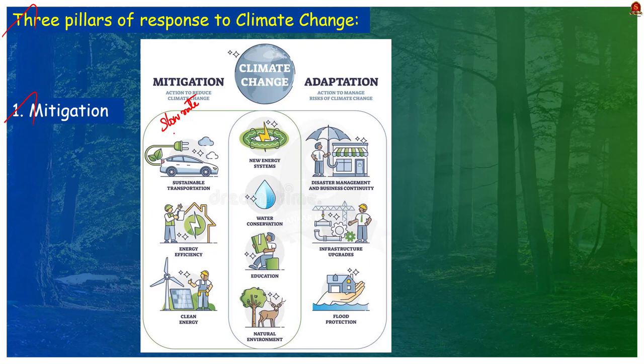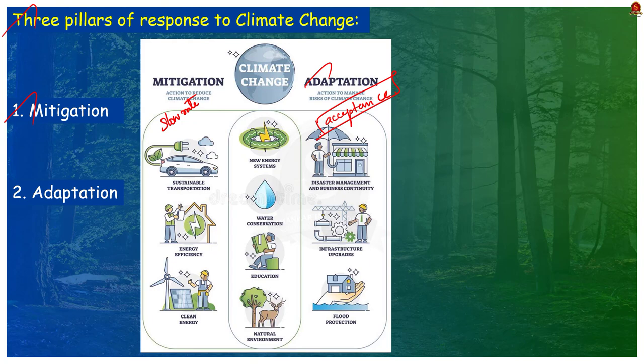The second important pillar is adaptation — that is, taking steps to live with the effects of global warming. Adaptation involves adjusting to actual or expected future climate. For example, some communities may decide to build dikes, levees, or sea walls to hold back water, and others may want to move people and economic activity out of flood-prone areas.